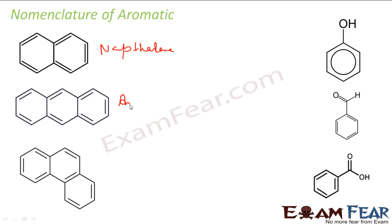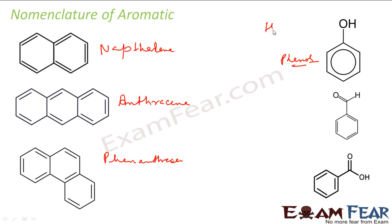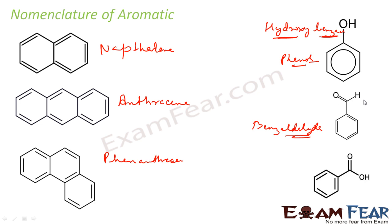With three rings in an angular arrangement it is called phenanthrene. This structure with an OH group is called phenol — that is the common name. If you want to write the IUPAC name it will be hydroxybenzene, because the main group is benzene and hydroxy is a prefix.